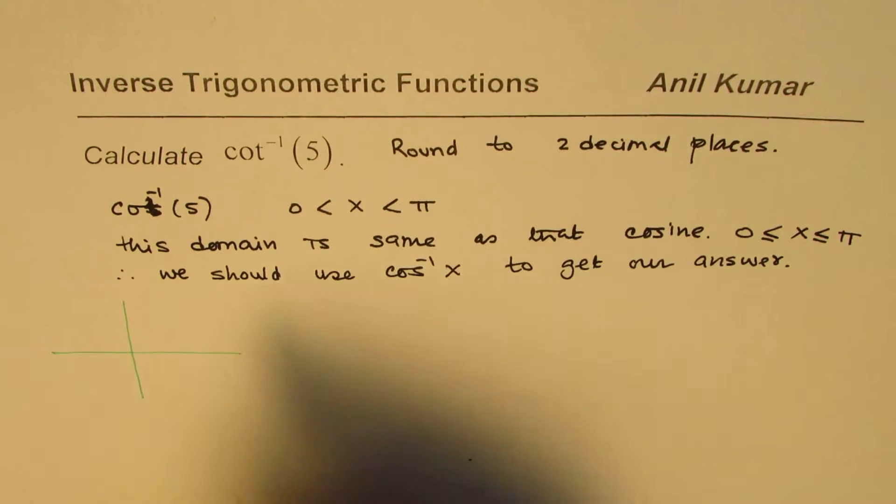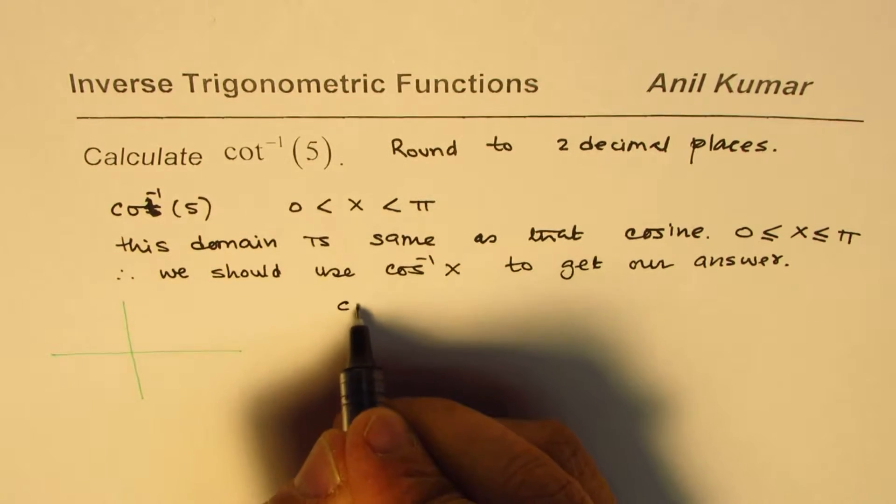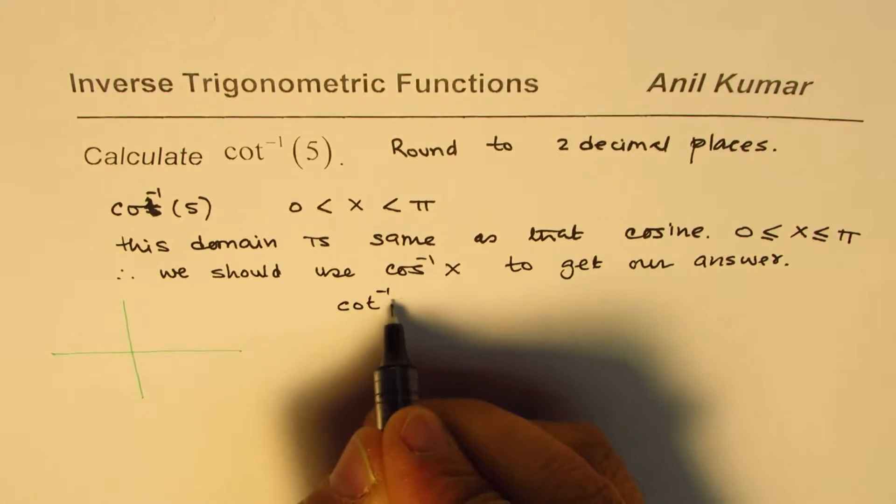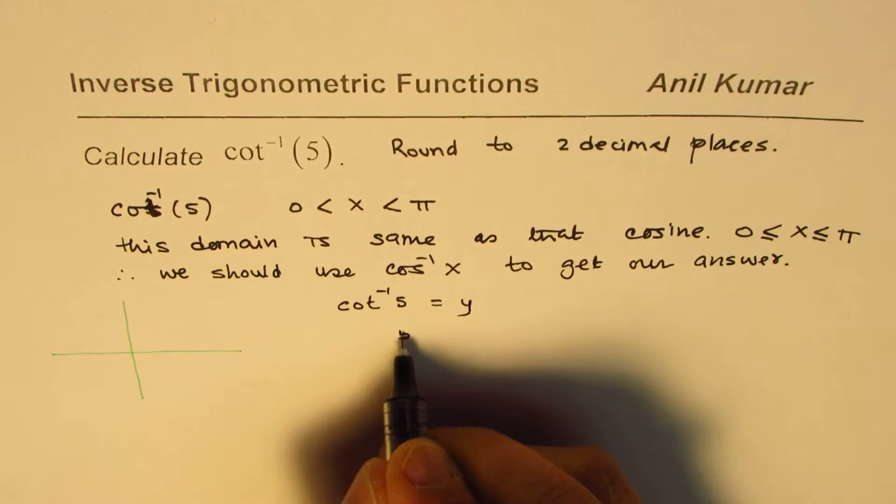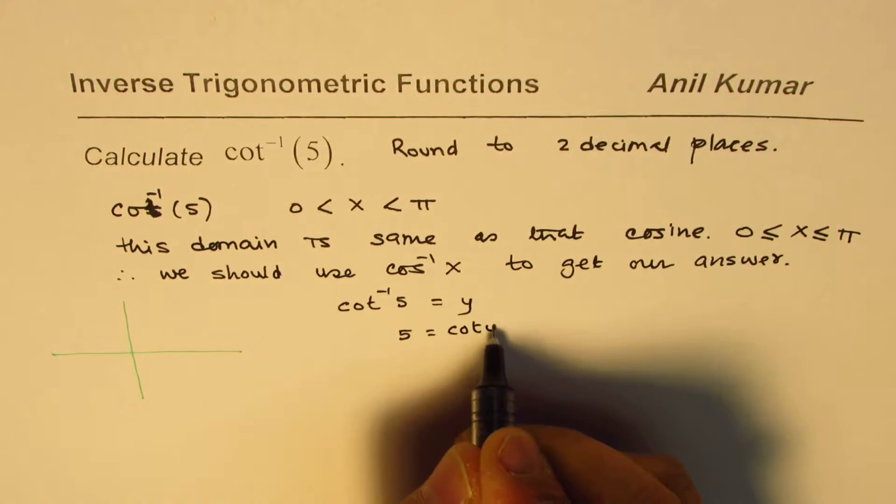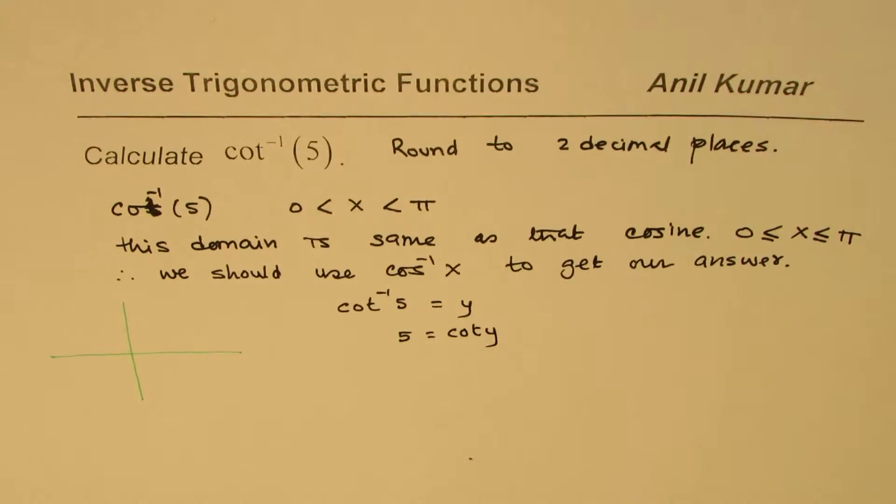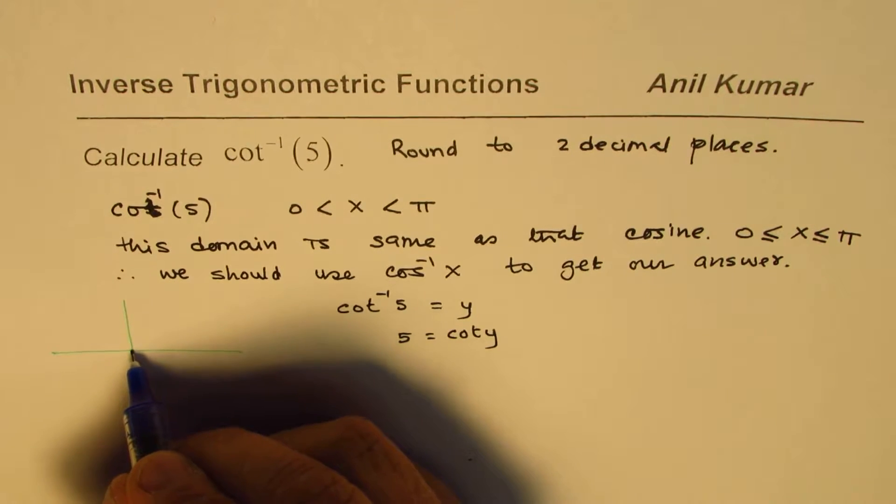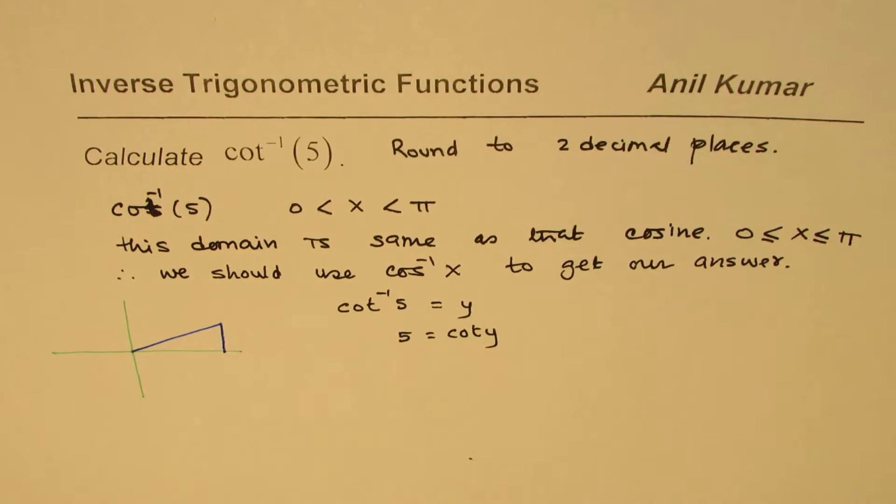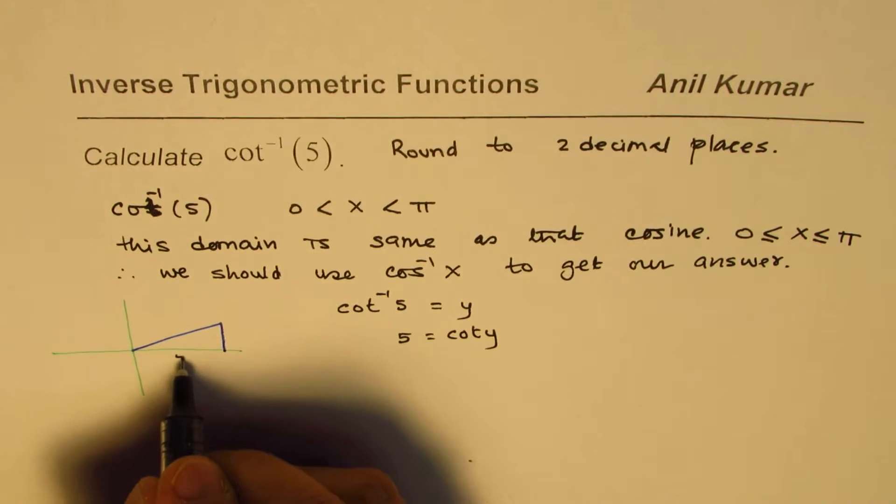Let's figure out the cos⁻¹ equivalent value. When I say cot⁻¹(5) equals y, then 5 equals cot y. Cot basically means base over opposite side. We can have a triangle where this side is 5 and this side is 1, and the angle is y.